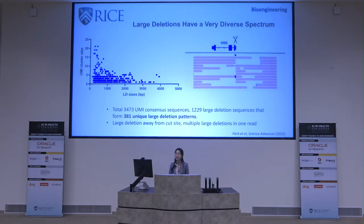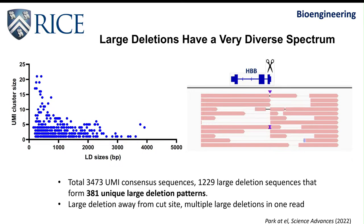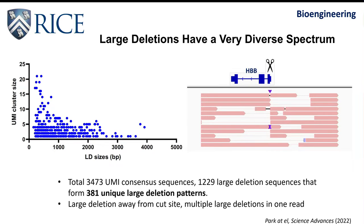Large deletions show a very diverse spectrum. For one particular sample, we analyzed 1,200 large deletion sequences and found 381 unique large deletion patterns. Most large deletions start from the CRISPR cut site, but we also found some alleles with large deletions occurring away from the cut site, and some alleles have multiple large deletions in a single read.